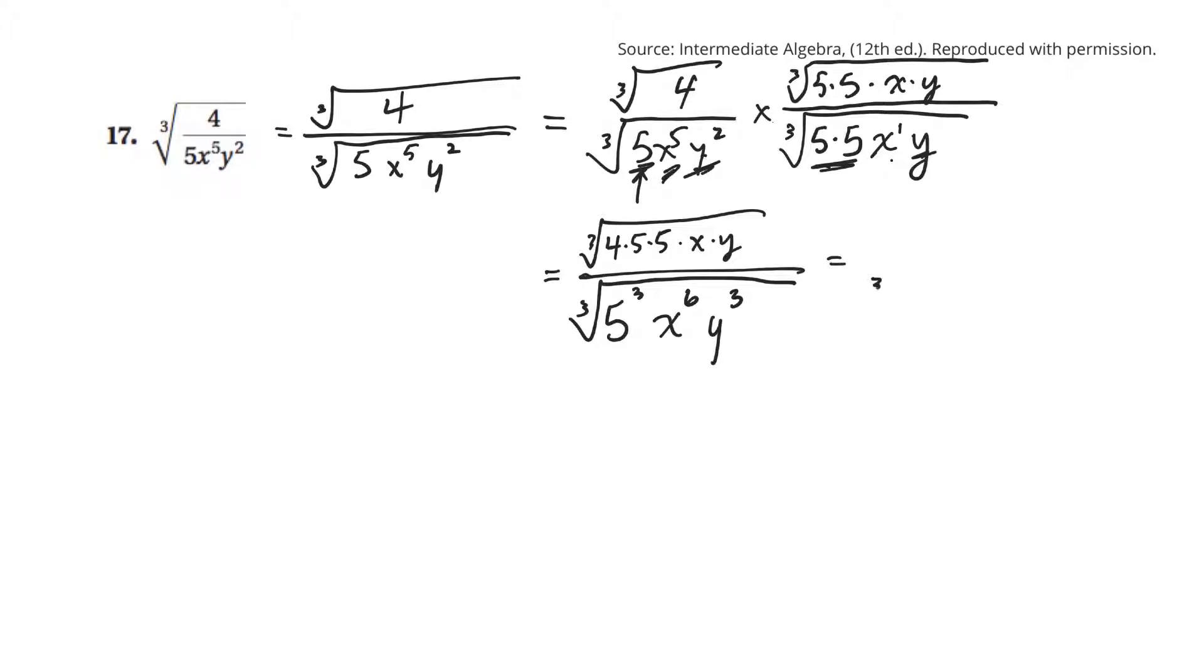So, on the bottom, oh, I don't need the square root sign or the cube root sign anymore. On the bottom, these three 5s, because this is a cube root, they'll come out and just make one 5 outside the radical. x to the 6th, that's two groups of x cubed inside there. And so, I can bring two x's out. And there's three y's here, so when I bring them out, they make one. There.